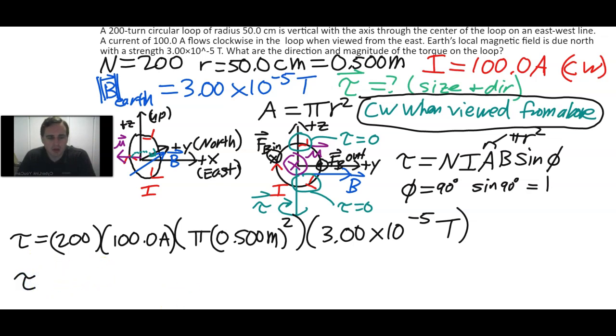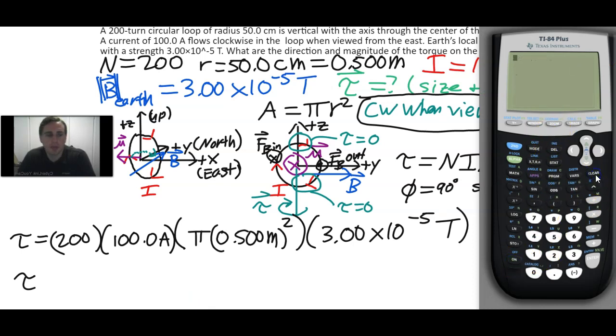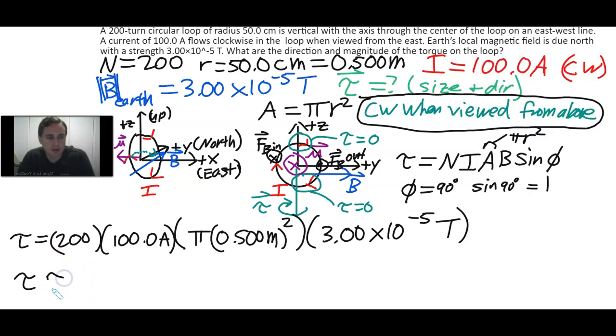Okay. And let's go to the calculator. So we'll go on and we'll clear. So this is a long multiplication problem. We'll just do 200 times 100. We don't need the 0.0 because the calculator doesn't care about significant digits. It's times 2nd pi times 0.5 squared times 3 times 10 to the minus 5 power. Whoops. Hang on. Something goes wrong. 2nd ee minus 5 power. Okay. I hope that looks correct. So let's write this down. It's about 0.471 to three significant digits. Approximately 0.471 newton meters. So that should be the magnitude. Okay. So this is our magnitude of our torque.